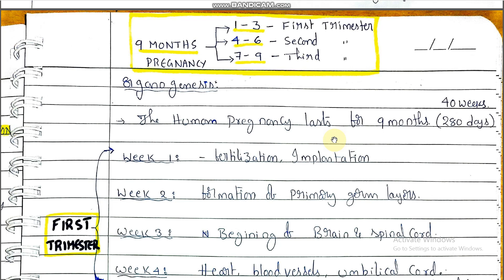Organogenesis takes place during the embryonic development period. The developing embryonic period is called gestation. In humans, the gestation period is nine months. Human pregnancy lasts for nine months, or 280 days, or 40 weeks.